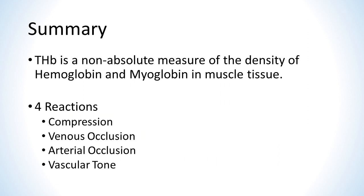In summary, THB or total hemoglobin is a non-absolute measure of the density of hemoglobin and myoglobin in the muscle tissue. THB does not measure blood flow directly, but it is used to identify four reactions that give us insight into what's going on with blood flow: compression, venous occlusion, arterial occlusion, and vasodilation or vasoconstriction.